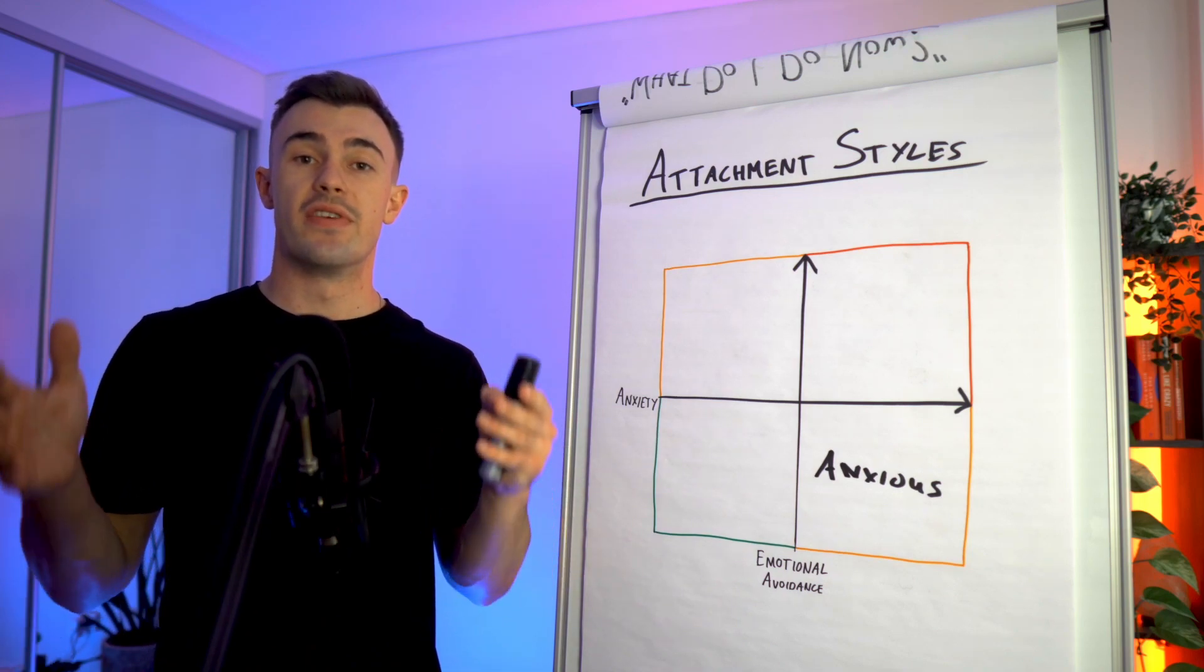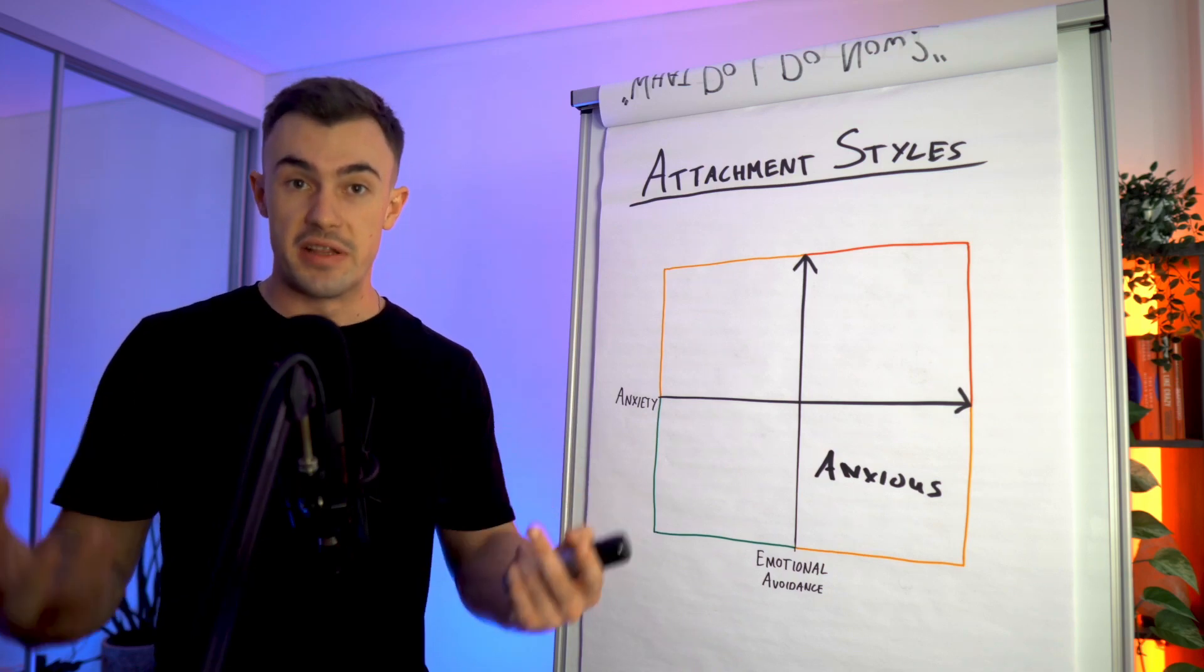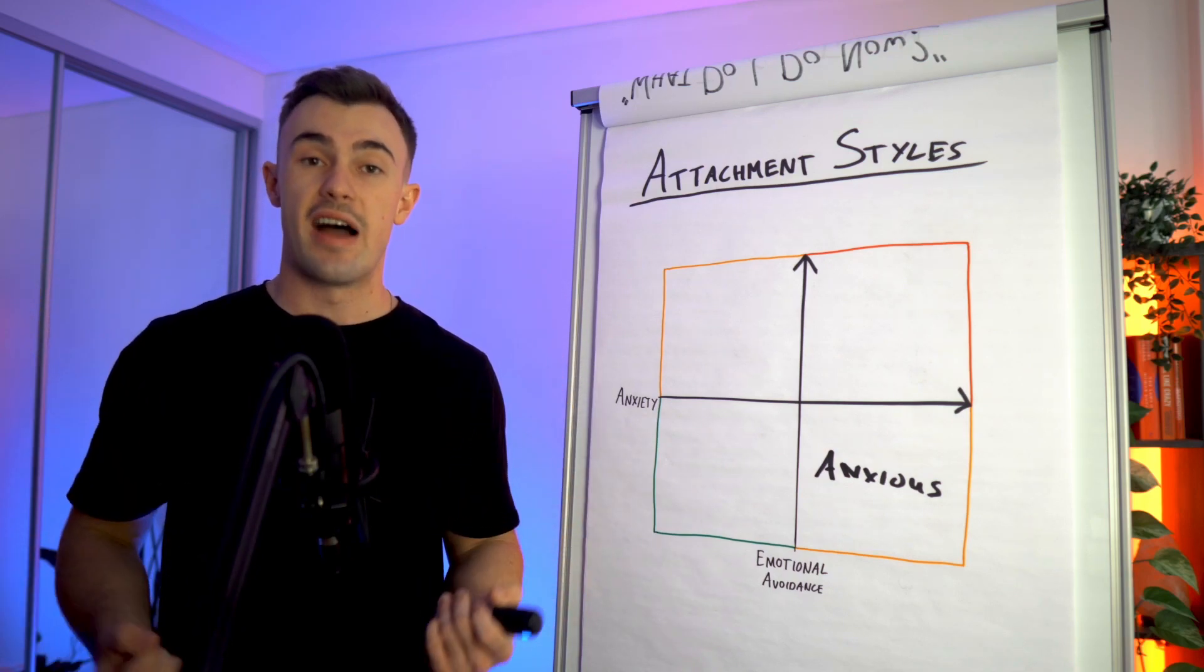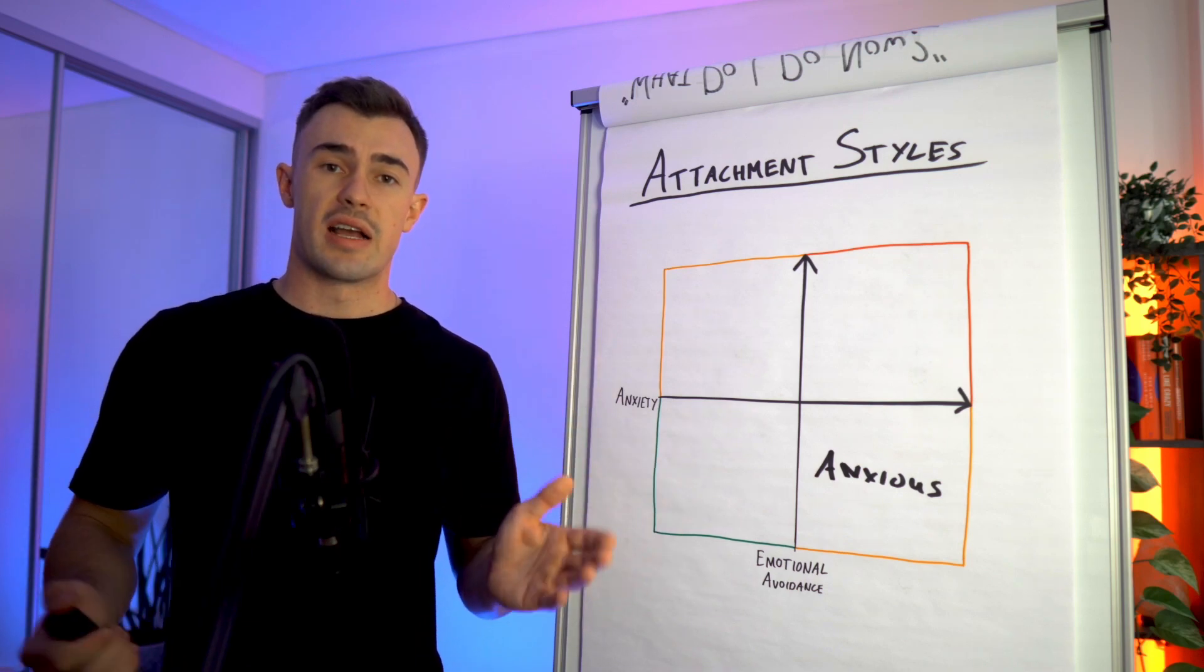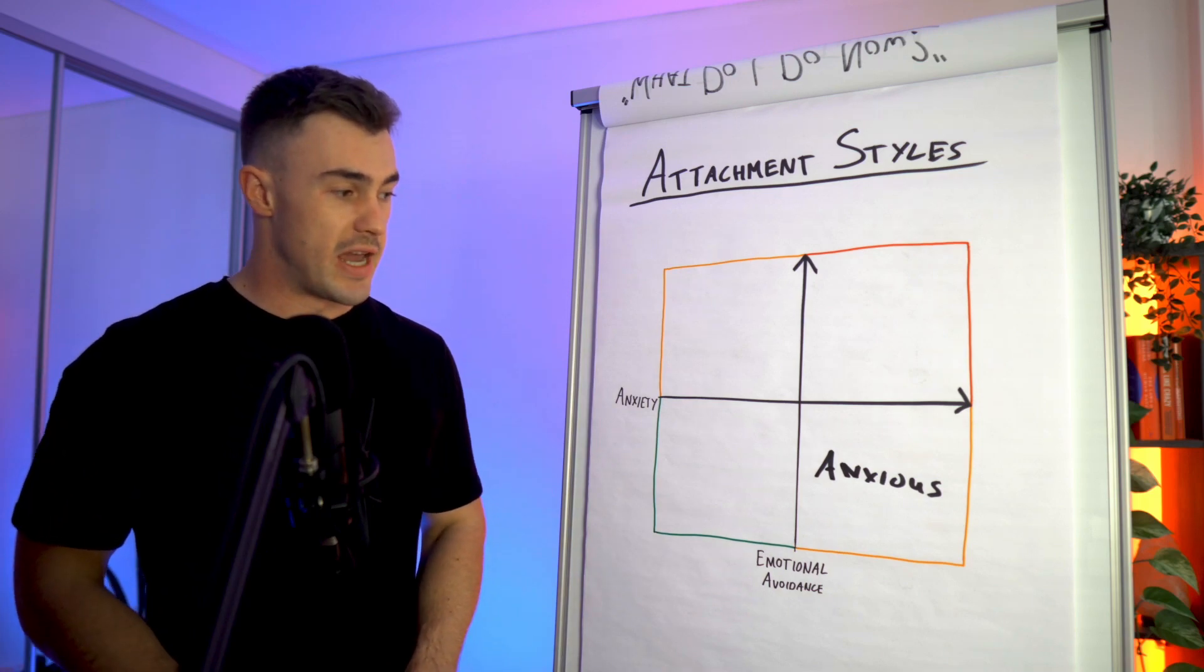But at the same time, they've developed too much of an attachment with that need for security and that feeling. And so it creates this dissonance and this anxiety whenever they feel like that secure love and support and attachment is lacking.